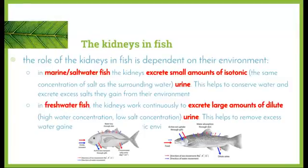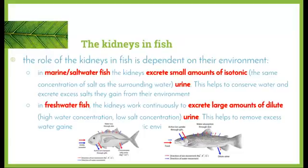The role of kidneys in fish is much more dependent on their environment than in mammals. In marine or saltwater fish, the kidneys excrete small amounts of isotonic solution — the same concentration of salt as the surrounding water. Isotonic means the same concentration, hyper means more, hypo means less. This helps the fish conserve water and excrete excess salt gained from their environment, since being in a salty environment means salt enters the fish much more easily.